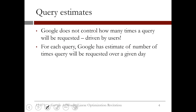The last piece of data that we need before we can define our problem is we need to know how popular the queries are. Obviously, Google does not control how many times a search query will be searched, because the users are the ones who submit the queries. However, Google does have an estimate of the number of times, on average, the query will be requested over a given day.